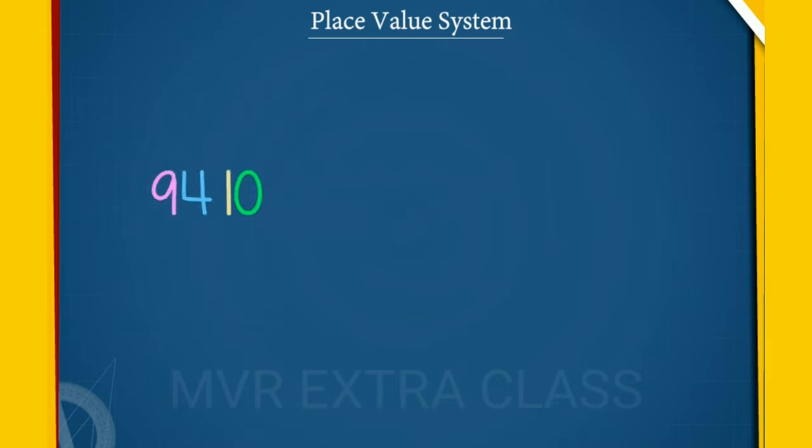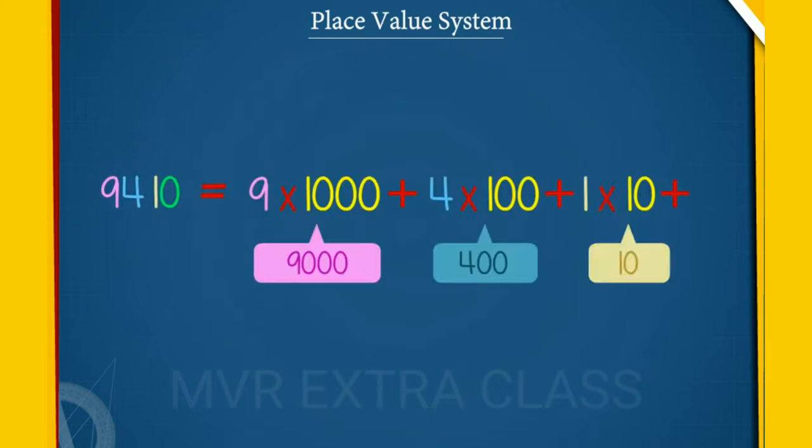Next example: 9,410. Every digit has a different place value.